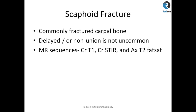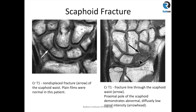Scaphoid fracture is next, or perhaps the most commonly encountered fracture of the carpal bones. Delayed or non-union is not uncommon. If you are in a rush, you can quickly do coronal T1, coronal STIR, and axial T2 fat-sat sequences. These three sequences give you the diagnosis in a short period of time without compromising image quality. On T1 weighted sequences — which we should almost always include in any MSK imaging — you get a low T1 signal intensity traversing the waist of the scaphoid with surrounding patchy signal changes, a classic example of a non-displaced fracture through the scaphoid waist.